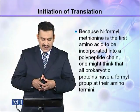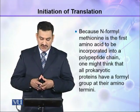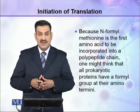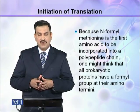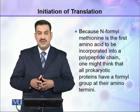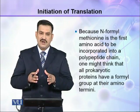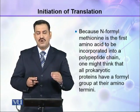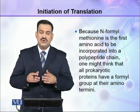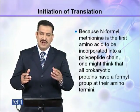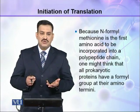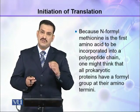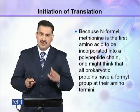Because N-formyl methionine is the first amino acid to be incorporated into a polypeptide chain, one might think that all prokaryotic proteins have a formyl group at their amino terminus. Since the first codon is always AUG, the first amino acid is always formyl-methionine, so one can expect that all prokaryotic proteins begin with formyl-methionine.